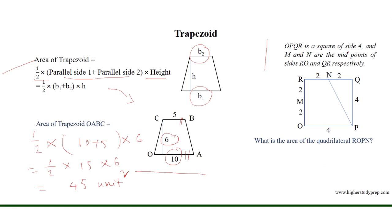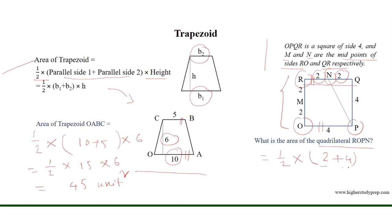Now, OPQR is a square of side 4, and M and N are the midpoints of sides RO and QR, so RN equals NQ equals 2 cm. The quadrilateral ROPN is a trapezoid; OP is parallel to RN, so RN and OP are the bases. The area equals half multiplied by 2 plus 4, where 2 and 4 are the lengths of RN and OP respectively, multiplied by the height RO, which equals 4 cm. Therefore, the area of quadrilateral ROPN as a trapezoid is 12 cm squared.